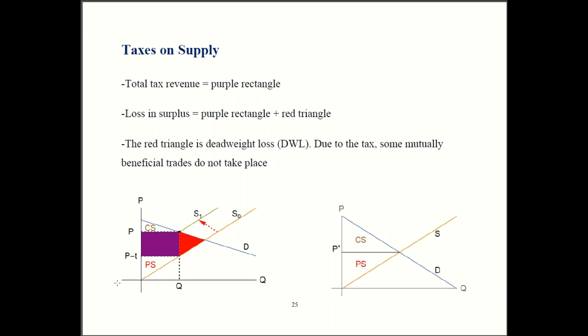So while both producers and consumers are harmed, there's a benefit to the government in the form of revenue. So this up here is P and we have P minus T. The gap between them must be the tax T. So this distance, this height of this purple rectangle, is tax per unit. Tax per unit times number of units, that is base times height is area, which is total revenue.